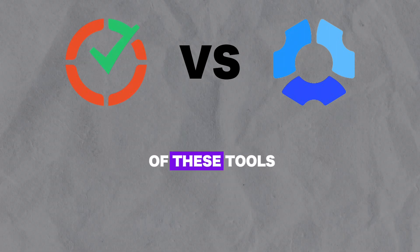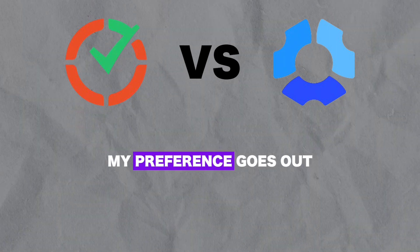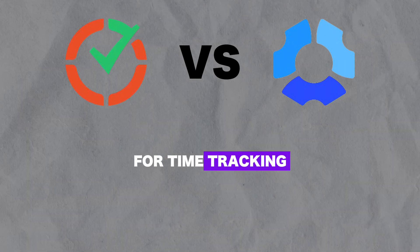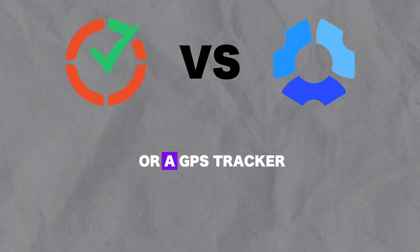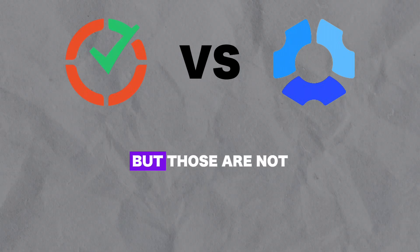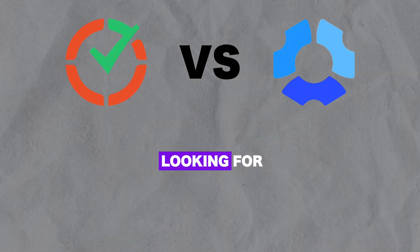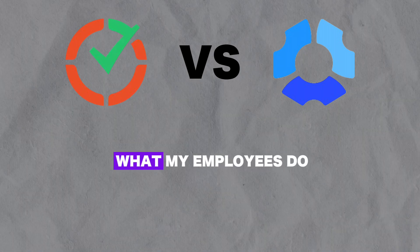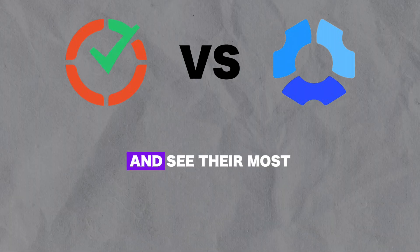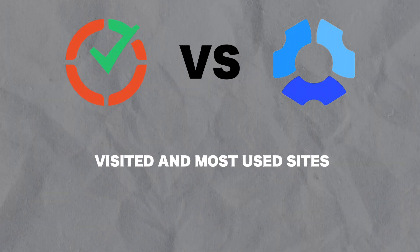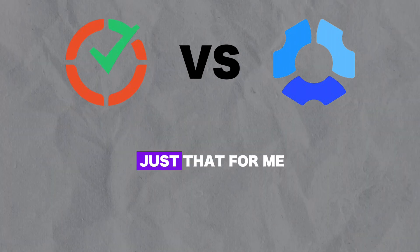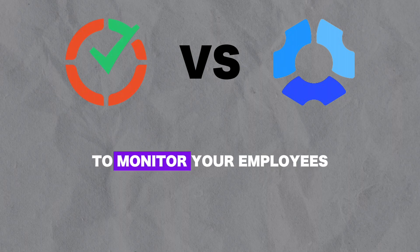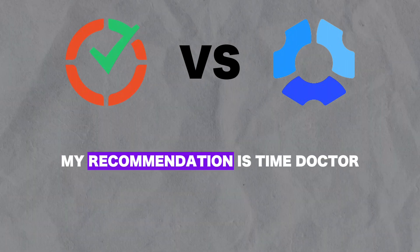However, after trying both of these tools, my preference goes out to Time Doctor for its more in-depth features for time tracking. It doesn't offer invoicing or a GPS tracker like Hubstaff, but those are not features I was personally looking for. I just wanted a tool that let me track what my employees do in working time and see their most visited and most used sites, and Time Doctor did just that for me. So if you're also just looking for a tool to monitor your employees, my recommendation is Time Doctor.